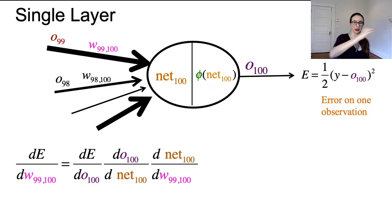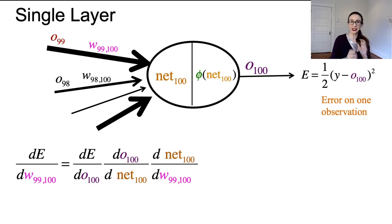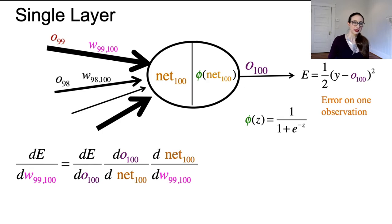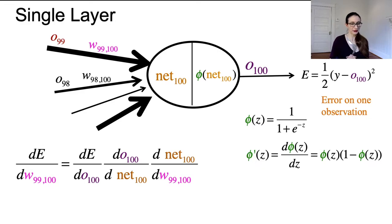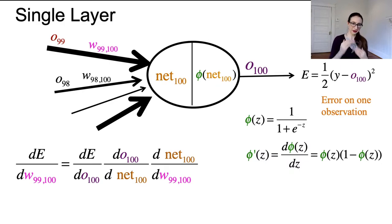The derivative of E with respect to W99100 — to get there, we travel through the neuron: dE/dO100 times dO100/dNet100 times dNet100/dW99100. We have to calculate each of these three terms. One thing that's handy before we go any further is the formula for the sigmoid activation function. Its derivative is very special: if you take the derivative of the sigmoid, it's actually itself times one minus itself. That's going to come in handy several times during this lecture.